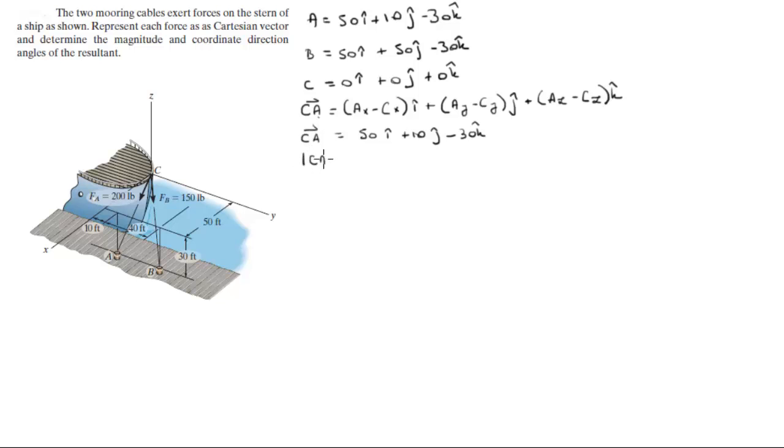The magnitude of this vector can be found by doing the X component squared plus Y component squared plus C component squared, and it comes out to be 59.16. To find the unit vector from C to A, you divide the vector over the magnitude, and you get this unit vector which is 0.845i plus 0.169j minus 0.507k.